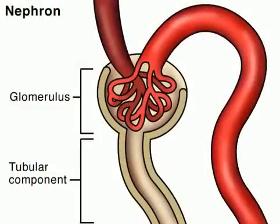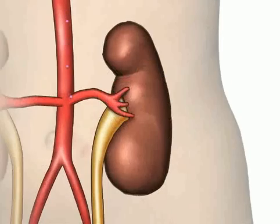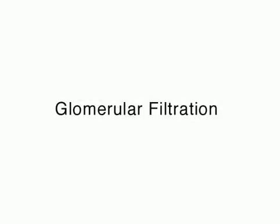Each kidney is composed of more than one million closely packed functional units called nephrons, which comprise a glomerulus and a tubular structure. Renal excretion of drugs and metabolites involves three processes: glomerular filtration, passive tubular reabsorption, and active tubular secretion.